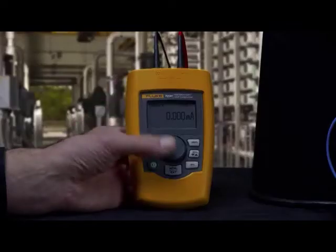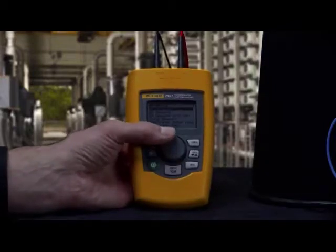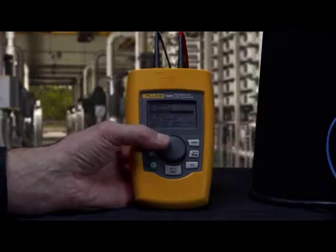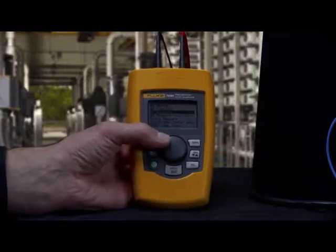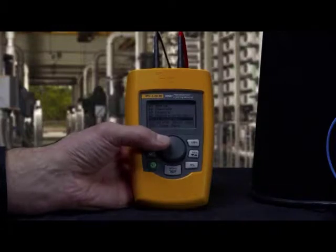Like any good loop calibrator, the 709 can source milliamps, simulate milliamps, measure milliamps, measure milliamps while providing 24-volt loop power, and measure DC voltage and loop power supplies.